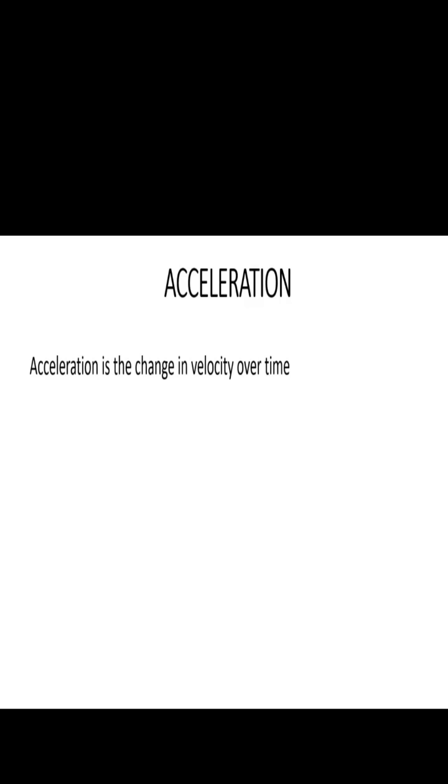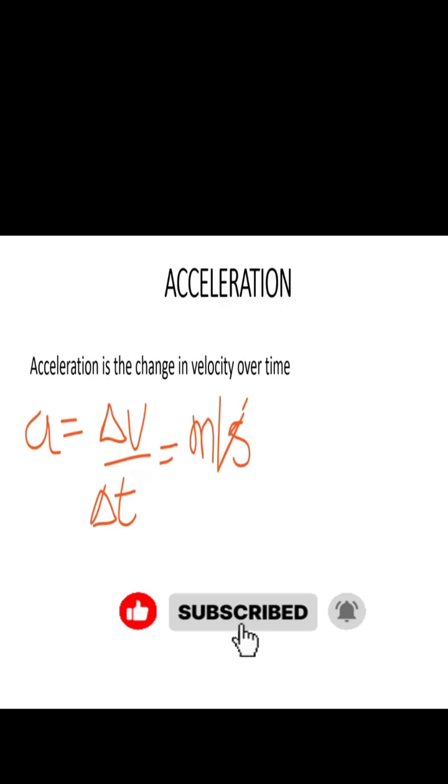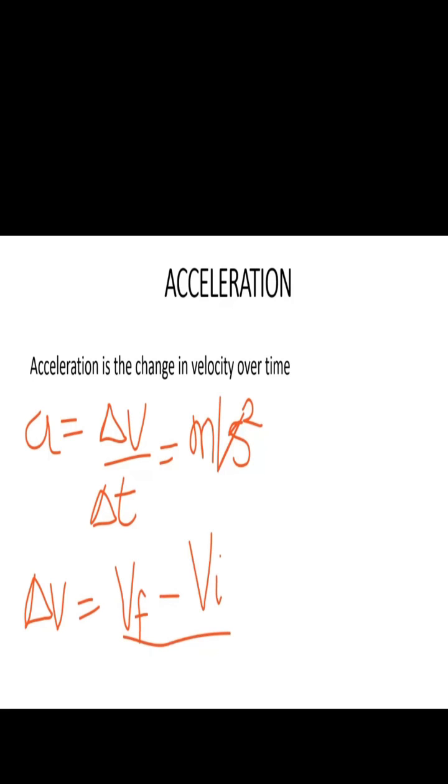That is, velocity is denoted as a equals change in velocity over time, change in time. And the unit of velocity is meters per second squared. And the change in velocity is the final velocity minus the initial velocity over the final time minus the initial time.